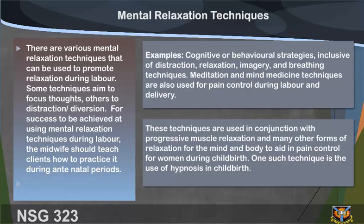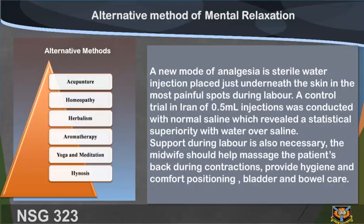Mental relaxation techniques: there are various mental relaxation techniques that can be used to promote relaxation during labor. Some techniques aim to focus thoughts, others to distraction or diversion. For success to be achieved, the midwife should teach clients how to practice these during the antenatal period. Examples include cognitive or behavioral strategies inclusive of distraction, relaxation, imagery, and breathing techniques. Meditation and mind-medicine techniques are also used for pain control during labor and delivery, used in conjunction with progressive muscle relaxation. One such technique is the use of hypnosis in childbirth.